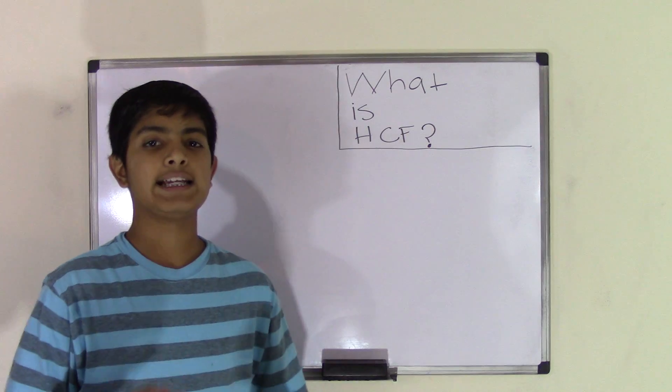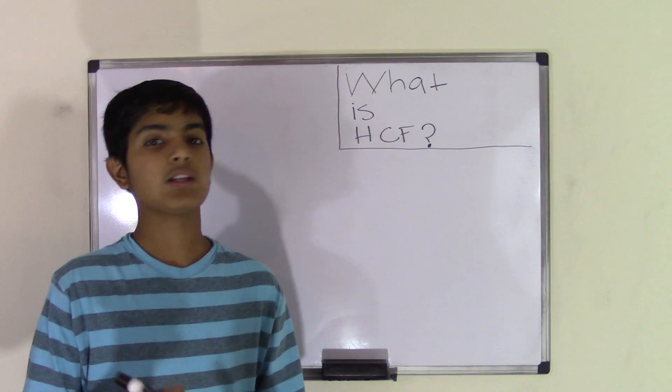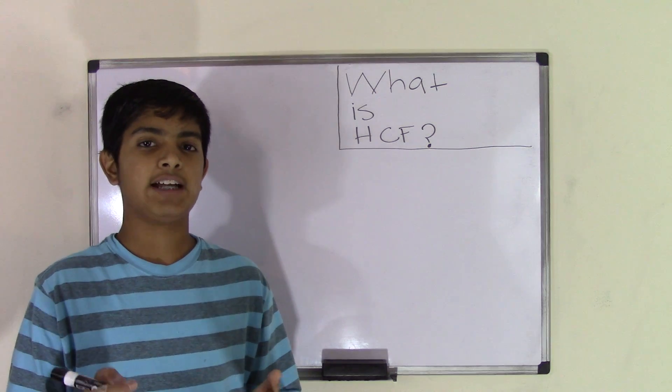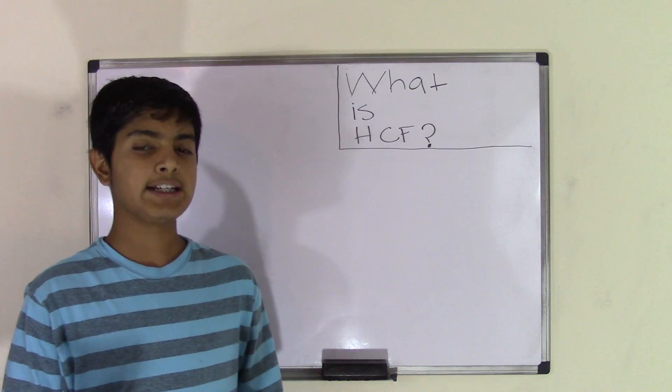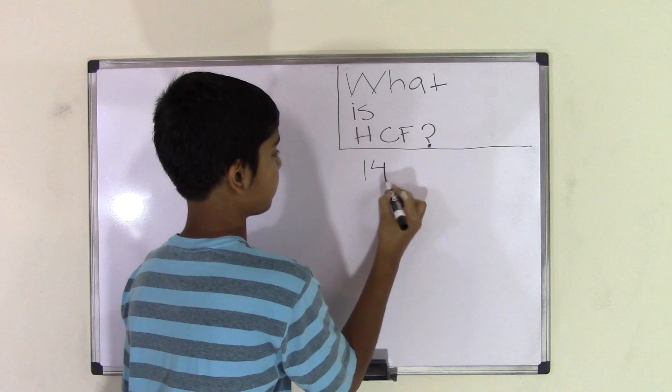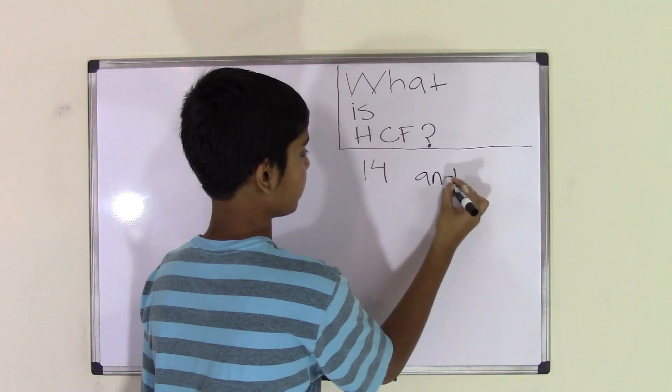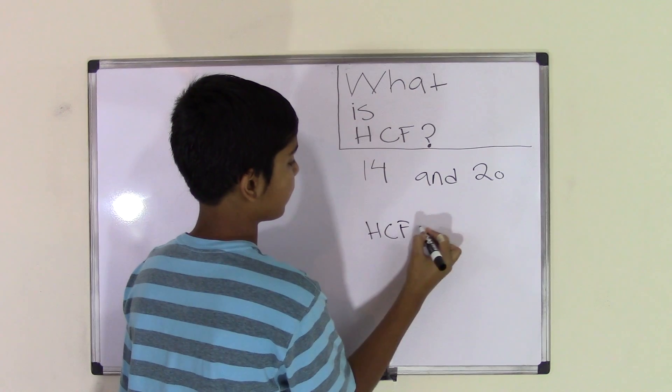So HCF is the highest common factor - the highest of all the common factors. As you probably know by now, we first need to find factors of the two numbers. So let's say we have the two numbers 14 and 20, and we need to find the HCF for these two numbers.